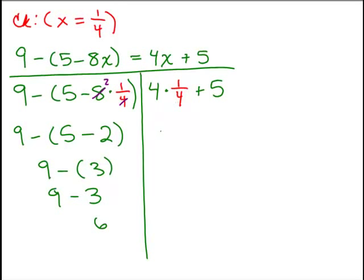So 4 times 1 fourth is 1. Those are just reciprocals of each other or you could say they cancel however you want to look at it, to 1. So I've got 1 plus 5 and that's 6. So I've got 6 on both sides.